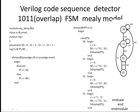Now S3. Suppose in S3 you get 1 — that means you got the sequence, so you have to get output 1. Since overlap is allowed, after getting 1 you next have to detect 0, so divert this to state S1. This is moving to S1 because overlap is allowed. Suppose you get 0 in S3 — that means you got '10', so next you have to detect, and you have to go to S2.